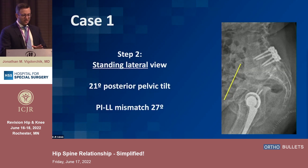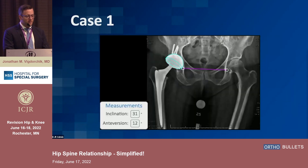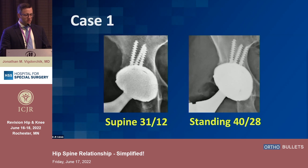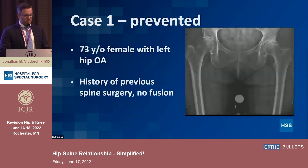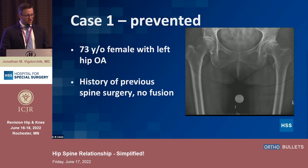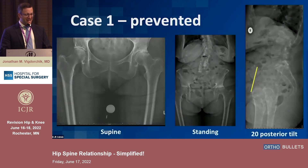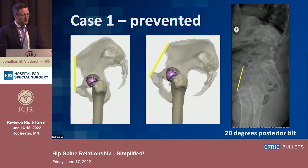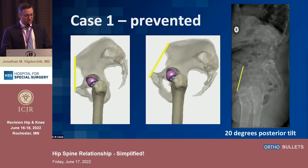Anterior dislocations are a concern especially for anterior approach surgeons — try to prevent this preoperatively. A posterior pelvic tilt of 20 degrees adds 15 degrees to your effective cup anteversion. If you put your cup in at 25 degrees, it's acting at 40 degrees because of the deformity. You can revise the cup to a corrected position, or use dual mobility, which has a much lower risk of revision than a 40 mm head. Recognizing this preoperatively is how you prevent those avoidable dislocations.